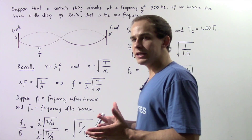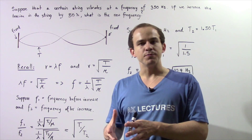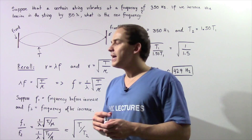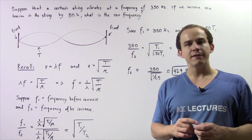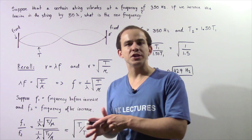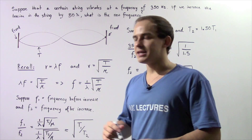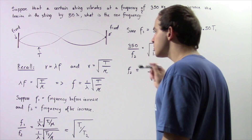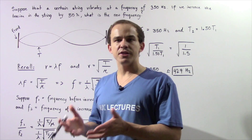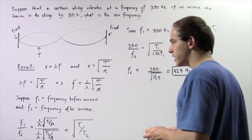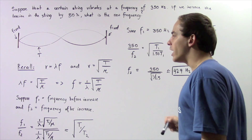So let's begin by recalling what the relationship between our velocity is and the frequency. Recall that the velocity of a wave is equal to the product of the wavelength and the frequency of that wave. And specifically for mechanical waves in strings, we can also use the following equation to calculate the velocity: velocity is equal to the square root of the tension divided by our mu, where mu is simply the mass per unit length of our string.